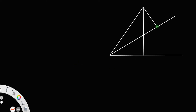Now drop a perpendicular from this point to this vertical line. Let us call this angle alpha and call this angle beta. We have this angle 90, this whole angle 90, and also this angle 90.